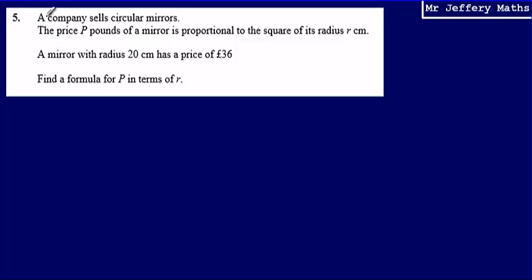This is question 5. Here we're told that a company sells circular mirrors. We're told the price P pounds of a mirror is proportional to the square of its radius r. Then we're told that a mirror with radius 20 centimeters has a price of 36 pounds. We're asked to find a formula for P in terms of r.